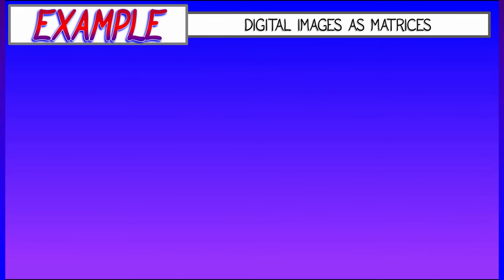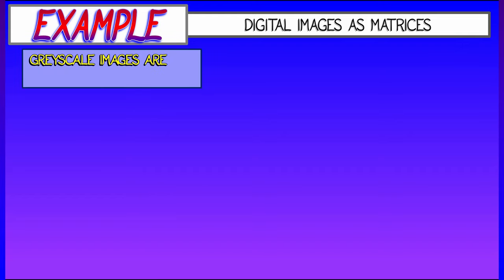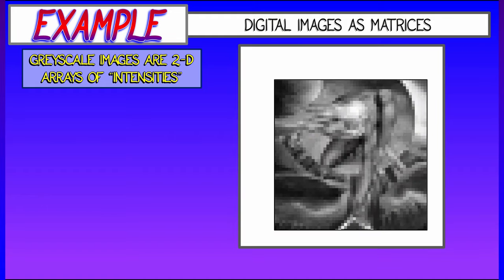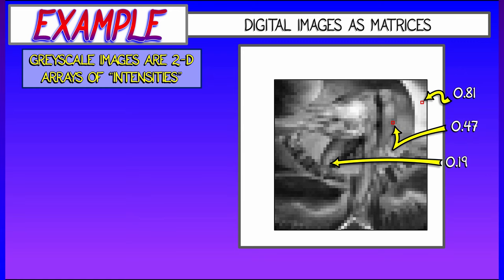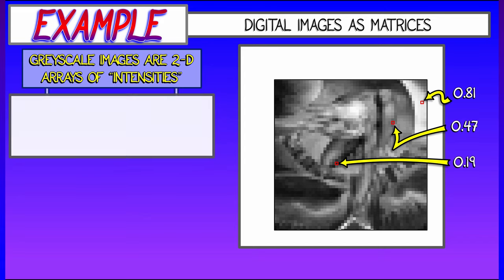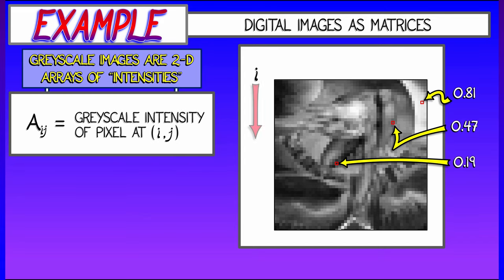For another example, consider digital images. Look at a grayscale image where everything is pixelated. This is really giving you a two-dimensional array of pixel intensities. Let's say that the lighter pixels have values close to 1, and the darker pixels have values close to 0.